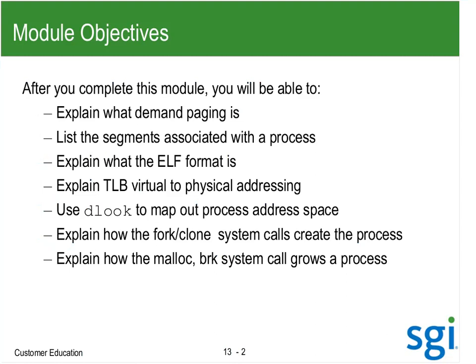One of the key things to understand here is demand paging. Demand paging basically says: I'm not going to worry about the page until I actually use it. We have two phases: a reservation and then an allocation. We can reserve a lot of memory and then never use it, so why allocate or waste that memory?